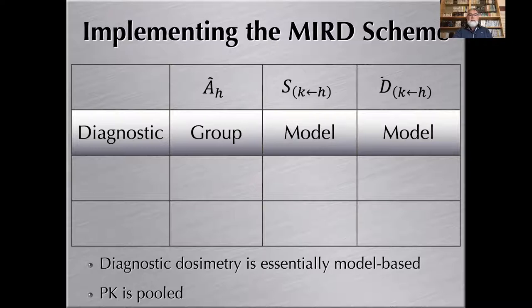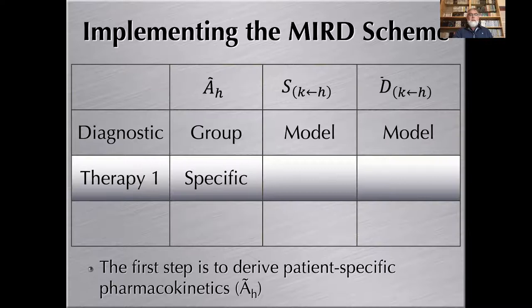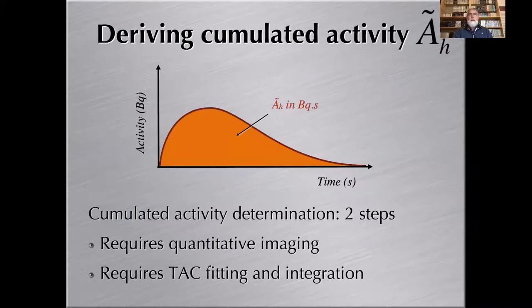Starting from what was seen in the previous lecture for diagnostic dosimetry, where accumulated activity is obtained for a group and S-values for a reference model, you end up with model-based dosimetry. But going in the direction of therapy, the first thing to do is to make sure that the pharmacokinetics is obtained for a given patient. So pharmacokinetics, quantitative imaging, and time activity curve fitting have to be obtained patient by patient.